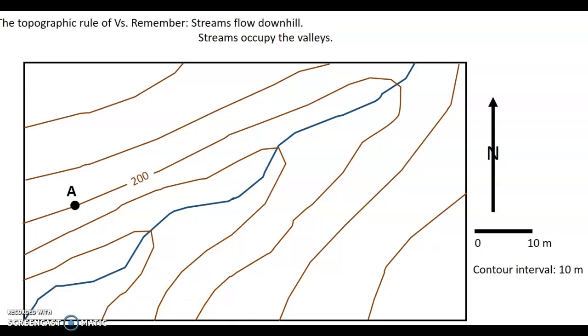So in this map that I've created here, we've got a stream that flows across this map and we need to know is it flowing towards the southwest or is it flowing towards the northeast. It's got to be one of those two, right?